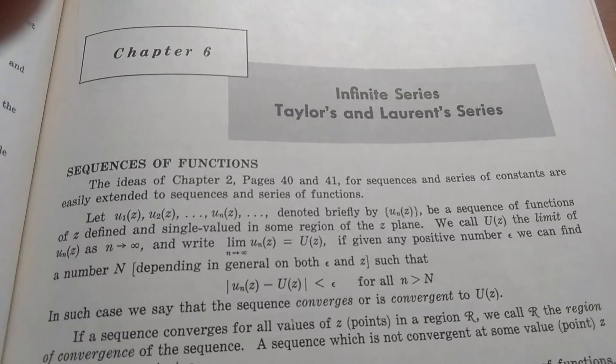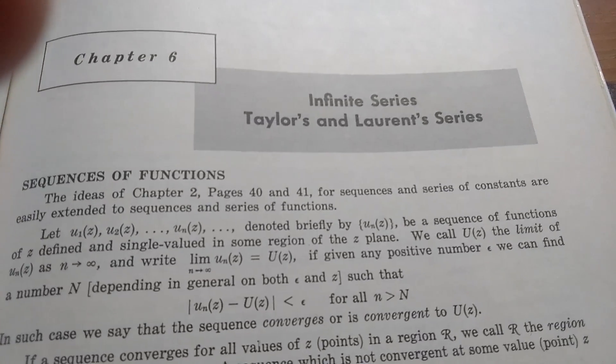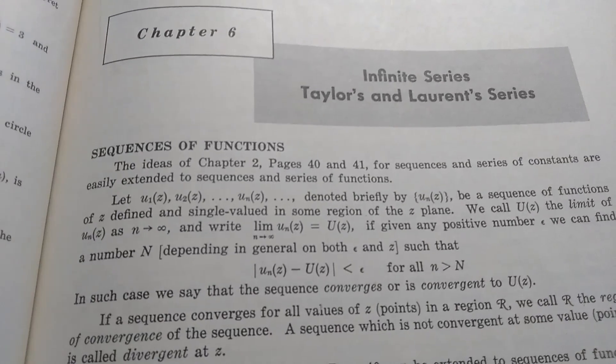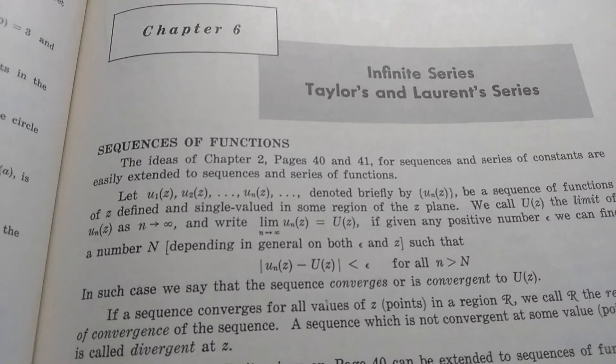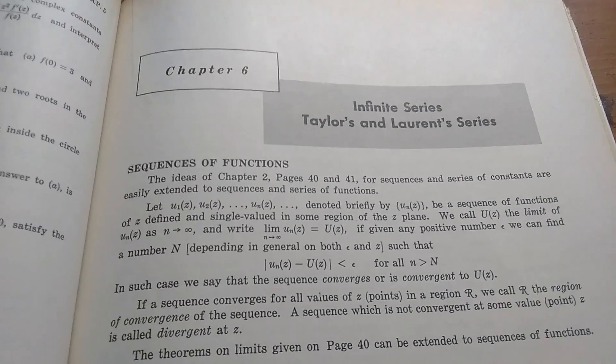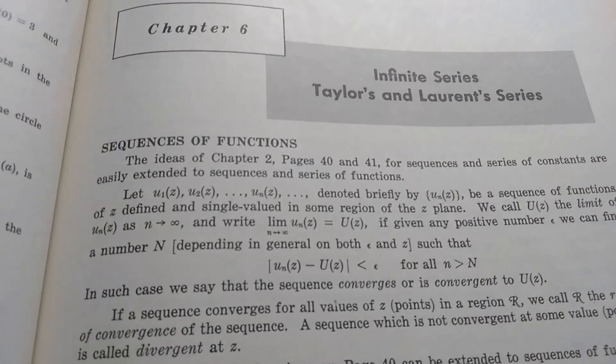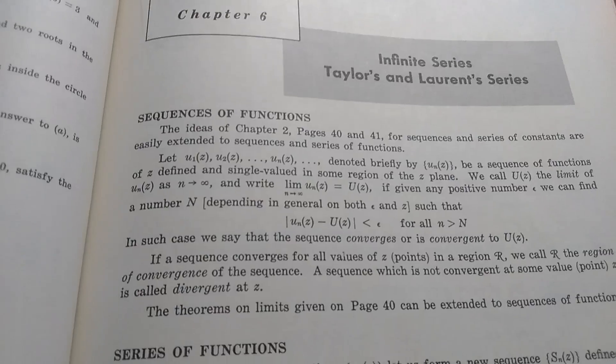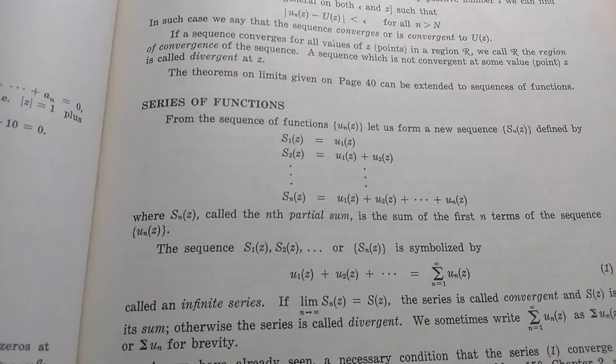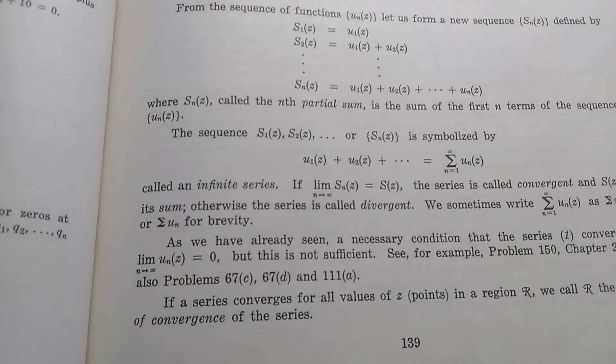So this is chapter six on infinite series, Taylor's, and Laurent's series. Schaum's gets straight to the point—there's no beating around the bush. They just jump into it, and they give you definitions, examples, and theorems.